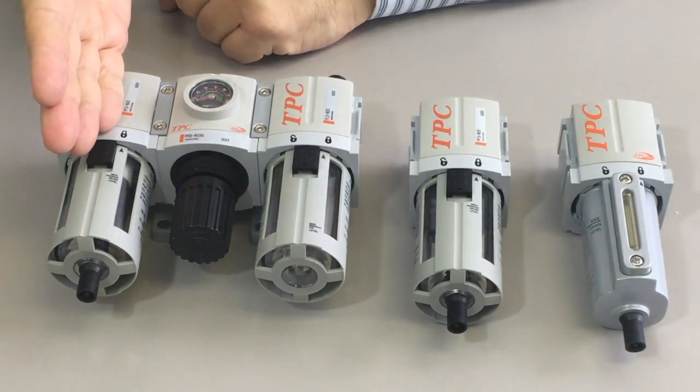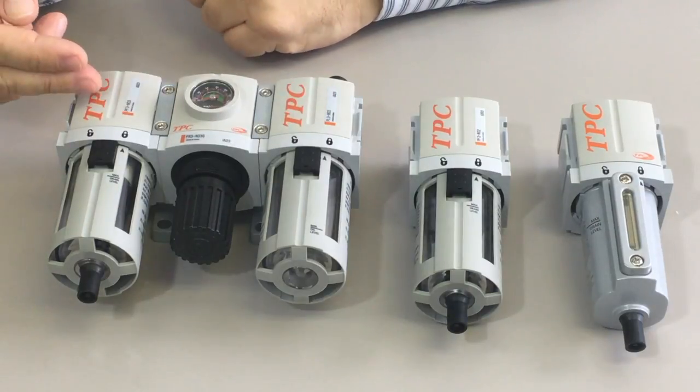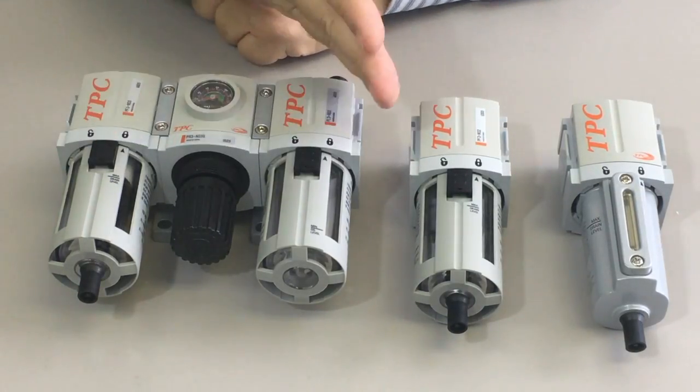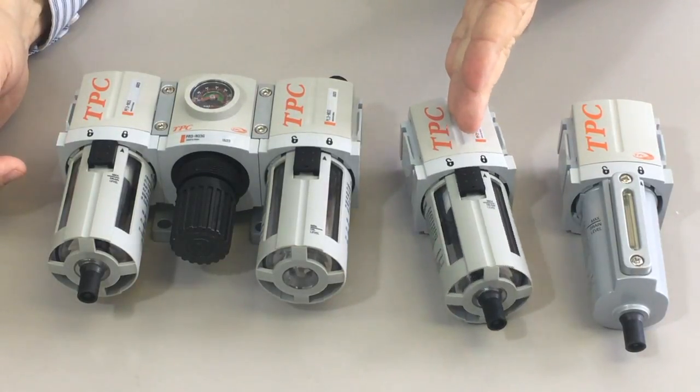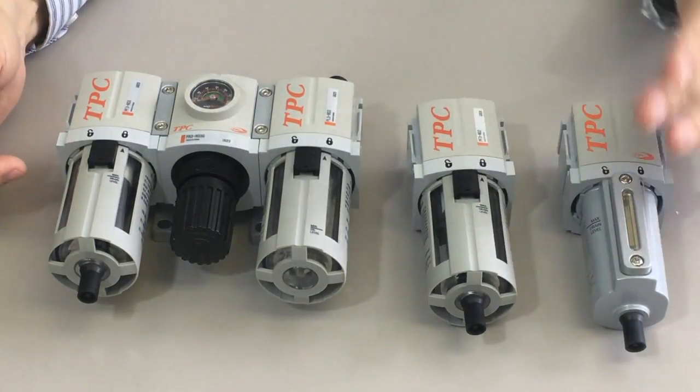The filter, the regulator, and the lubricator, typically in a standard combination, are found in line like this, although you can also buy the individual components, of course, and many features available.